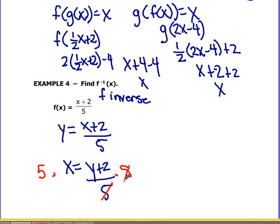It would cancel out on the one side. We would get 5x on the other. So we would have 5x equals y plus 2. Last step, take away 2.